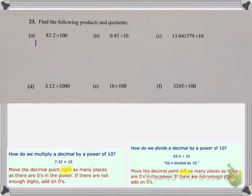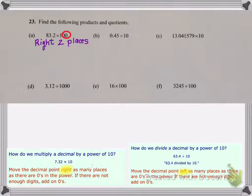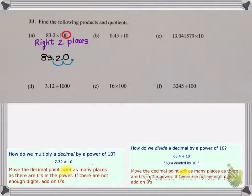Let's begin with part a. It's a multiplication problem so that tells me I'm going to move my decimal point to the right. Now I have to decide how many places. I look at my power of 10 which is 100 and there are two zeros in 100, so that means I'm moving my decimal place right two places. So if I have 83.2 I'm going to move that decimal place two places to the right and fill in any gaps with zeros. The gap is going to get filled in with a zero, and my final answer is the whole number 8320.